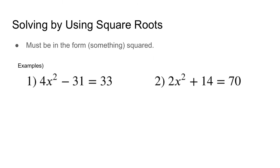Graphing quadratics is really easy, provided it meets a very nice x-intercept. But if it doesn't, we're going to have to rely on one of our other methods. The second method is solving using square roots. When solving using square roots, you have to have it in the form something squared — and there can't be another variable. You can only have an x squared term. Like in example 1, we have 4x squared minus 31 equals 33, and in example 2, we have 2x squared plus 14 equals 70. There's no standalone x term — only x squared.